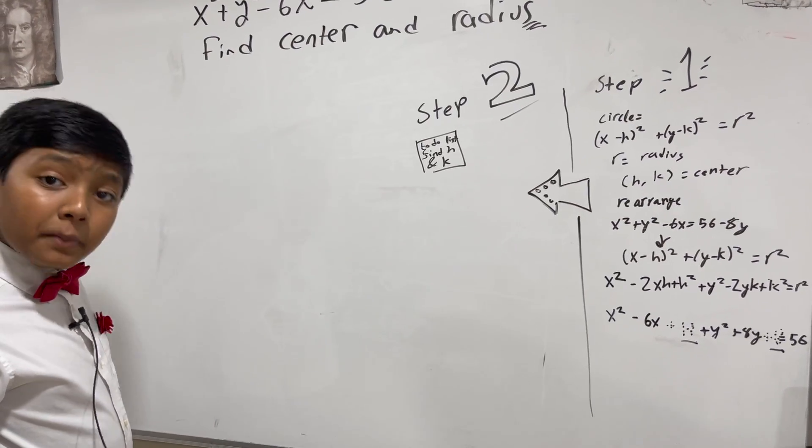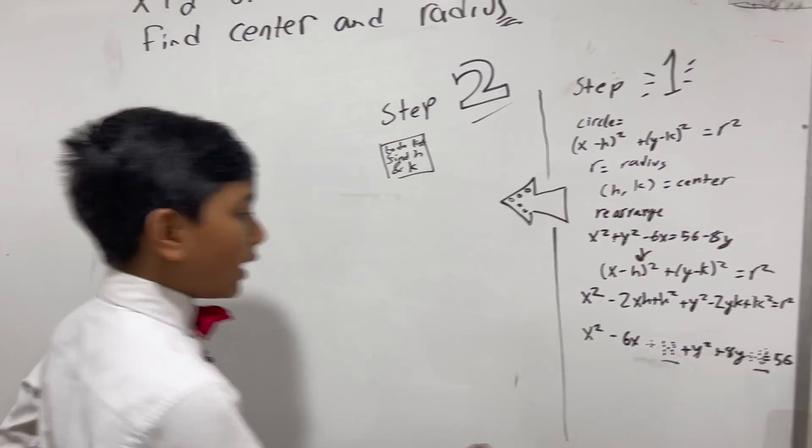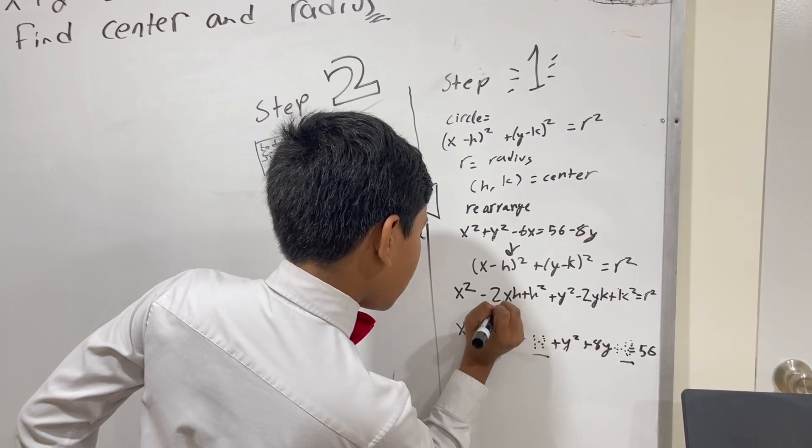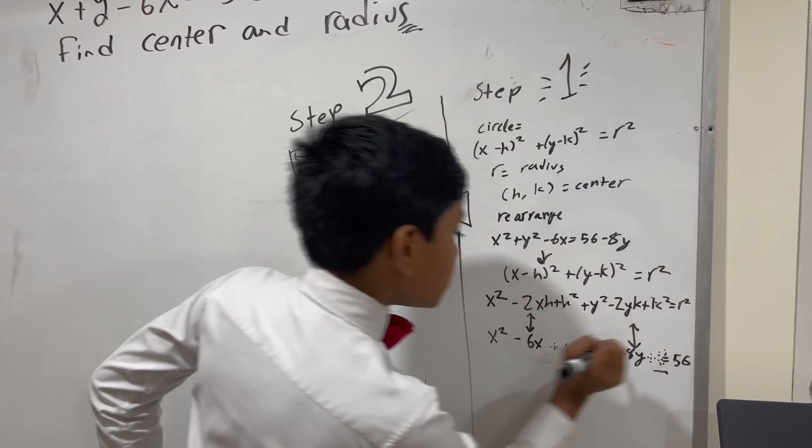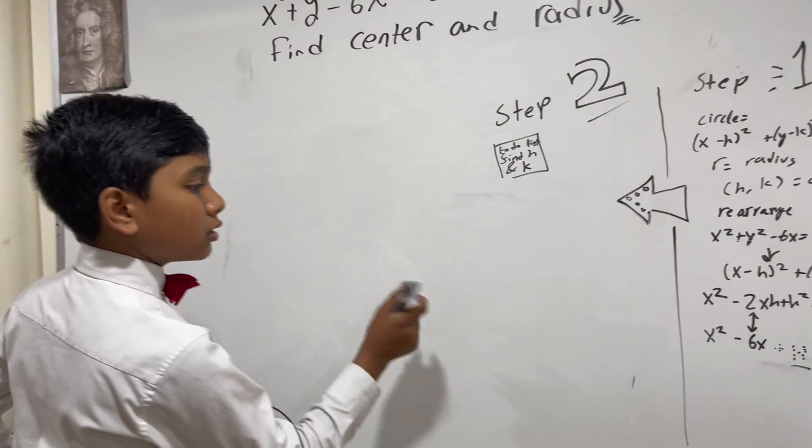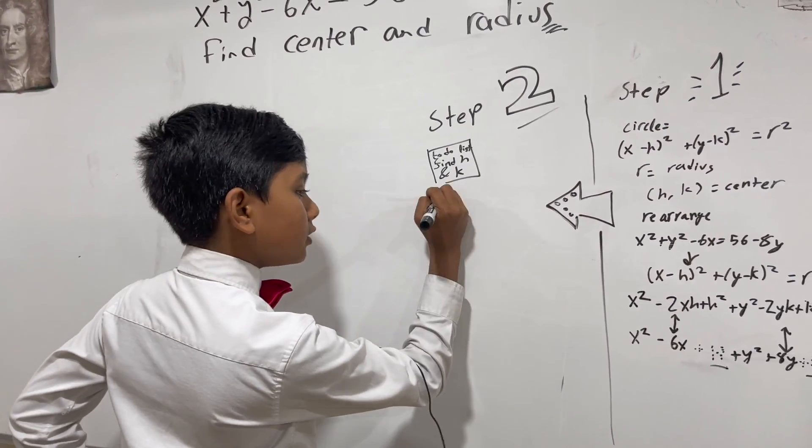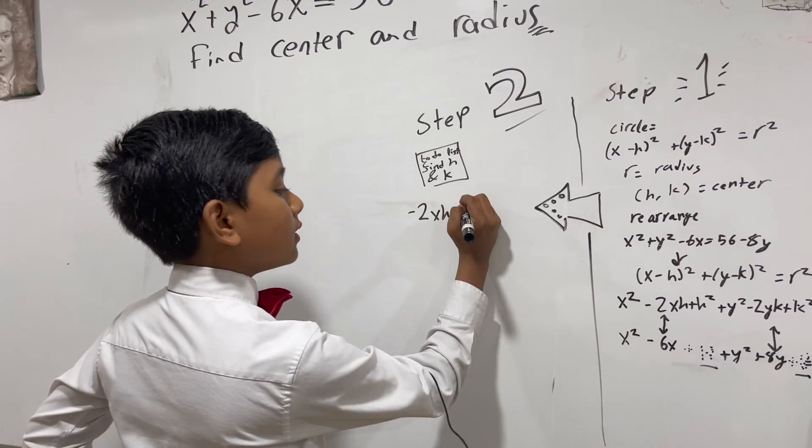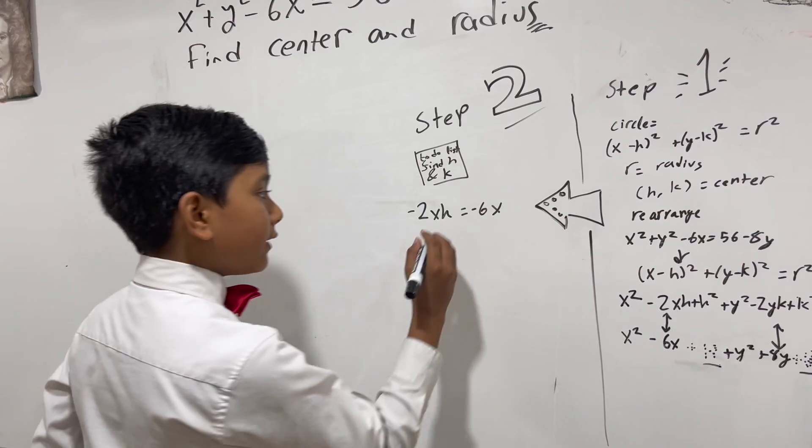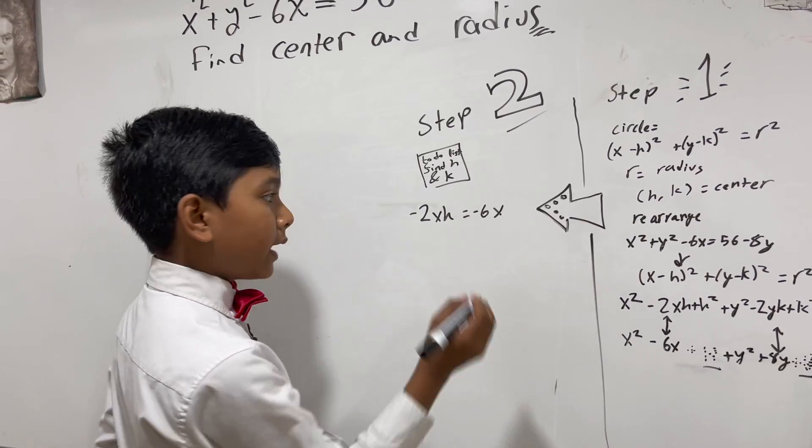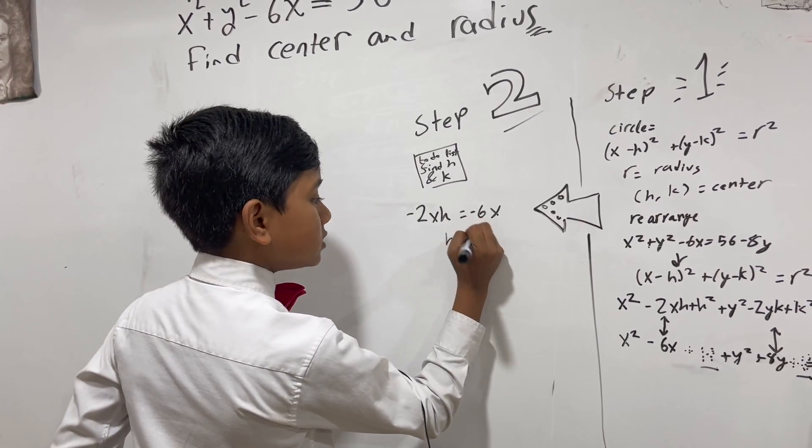So, that becomes much, much easier when you realize that these two terms align, and so do these two. So, let's set them equal to each other. So, negative 2XH is equal to negative 6X. So, now, we can find H by dividing both sides by negative 2X, which gives us 3.